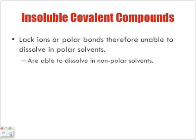Insoluble covalent compounds lack ions or polar bonds, therefore are unable to dissolve in polar substances or solvents. They are able to dissolve in non-polar solvents. Remember what we talked about: polar dissolves in polar solvents — a polar solute in a polar solvent. Non-polar solute in a non-polar solvent. They don't mix and match — like dissolves like.